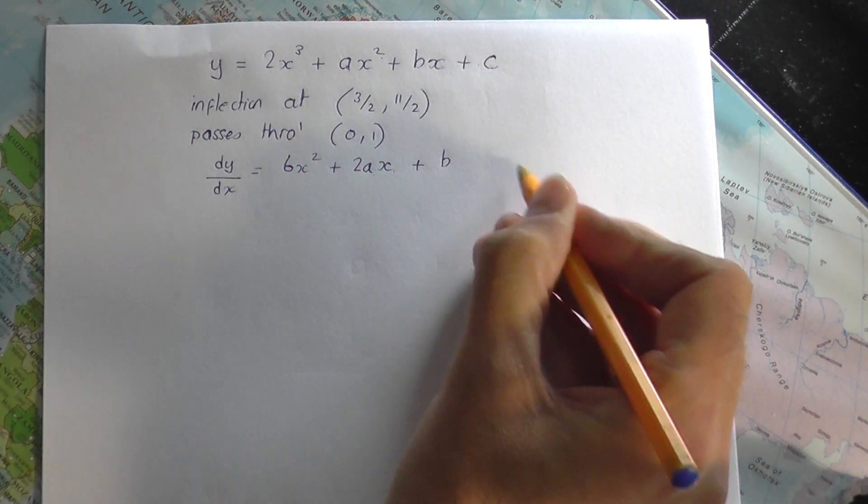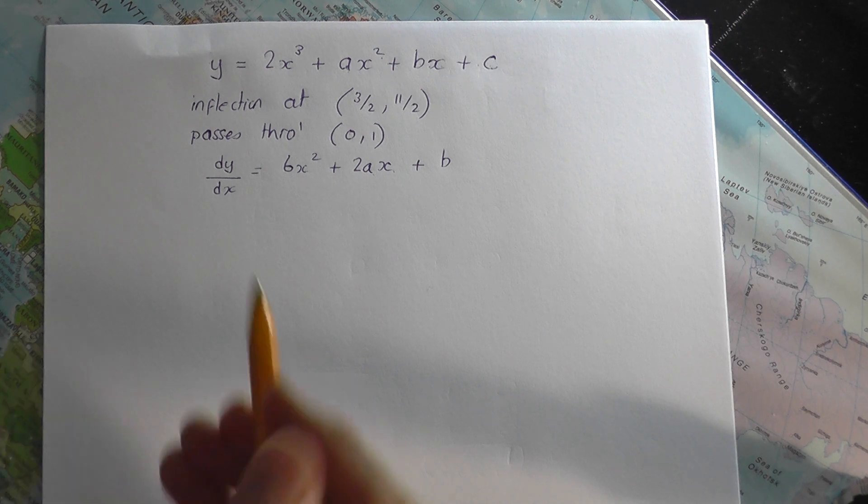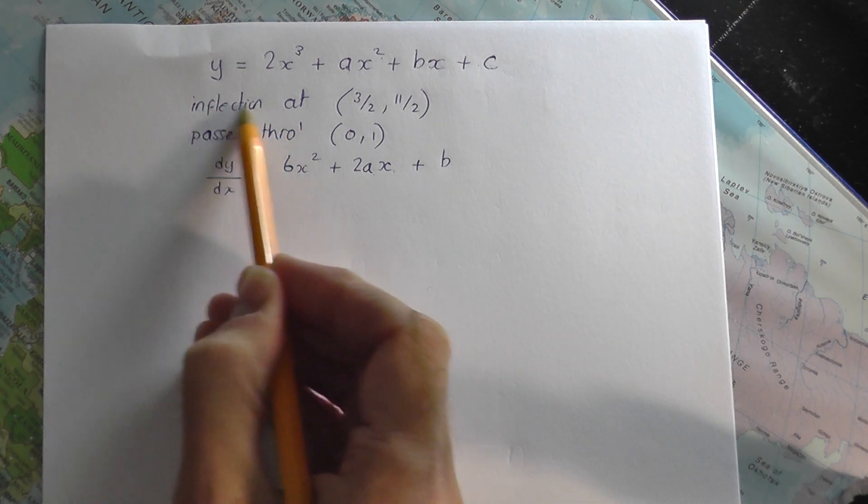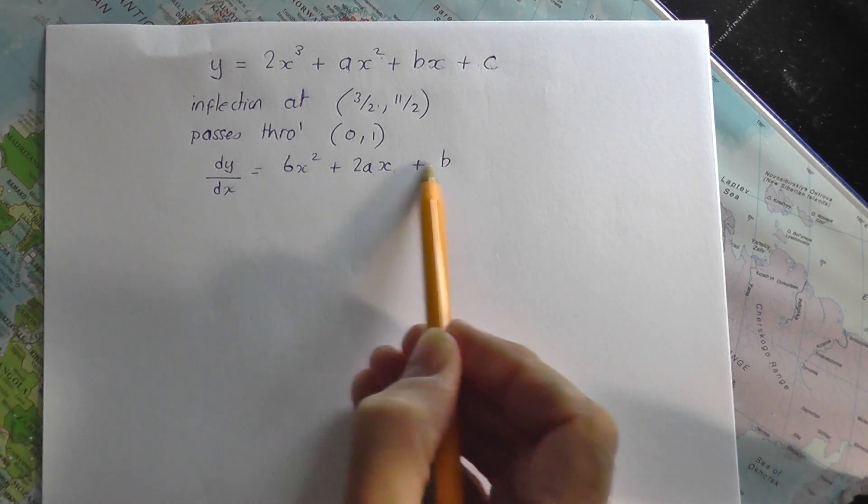Now, I'm not going to put that equal to 0, because that would be true for any stationary points, but I have no information about stationary points. I've only got information about points of inflection. So I do nothing at the moment with that.